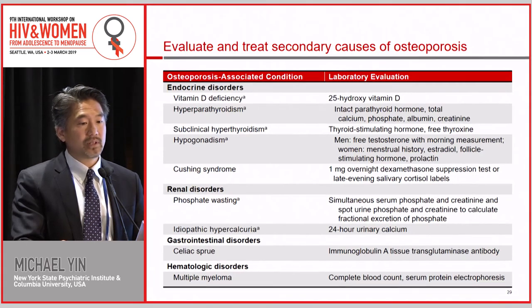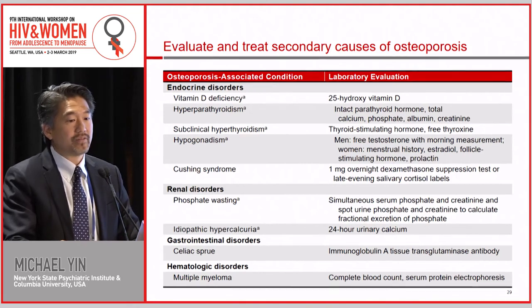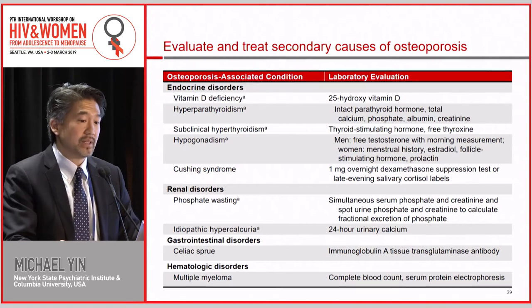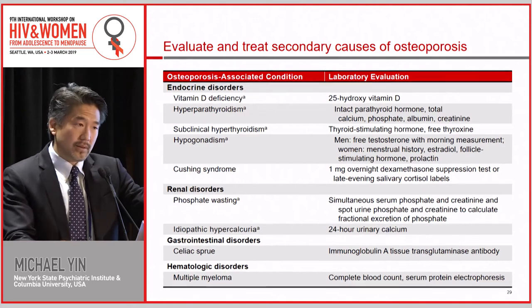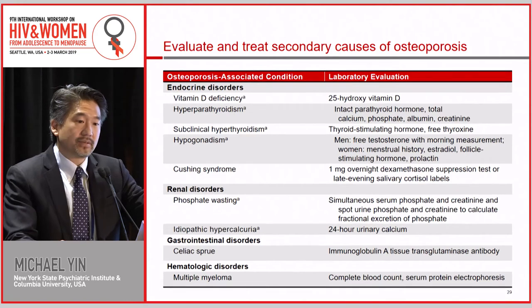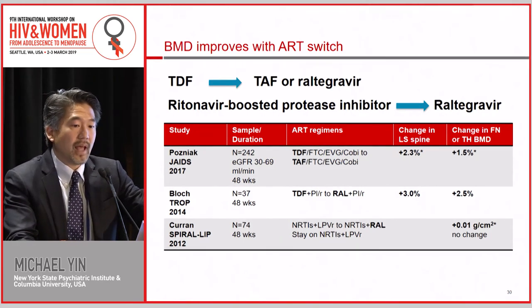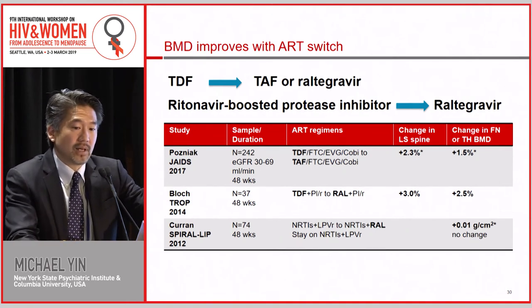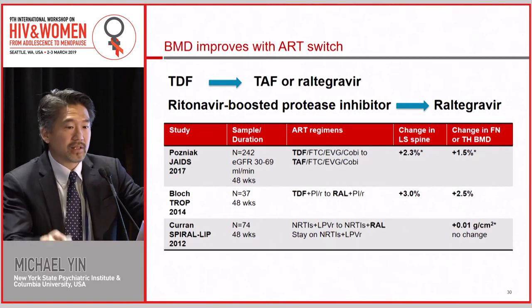When you find low bone density or osteoporosis on DEXA, look at secondary modifiable factors such as vitamin D deficiency, hyperparathyroidism, hypogonadism, and phosphate wasting — particularly for patients on TDF. If a patient on TDF has low bone density, switching to TAF or an integrase inhibitor, or switching from a protease inhibitor to an integrase inhibitor, will yield short-term gains in bone density of one to two and a half percent. Checking a DEXA after switching to decide what to do next is a reasonable approach.